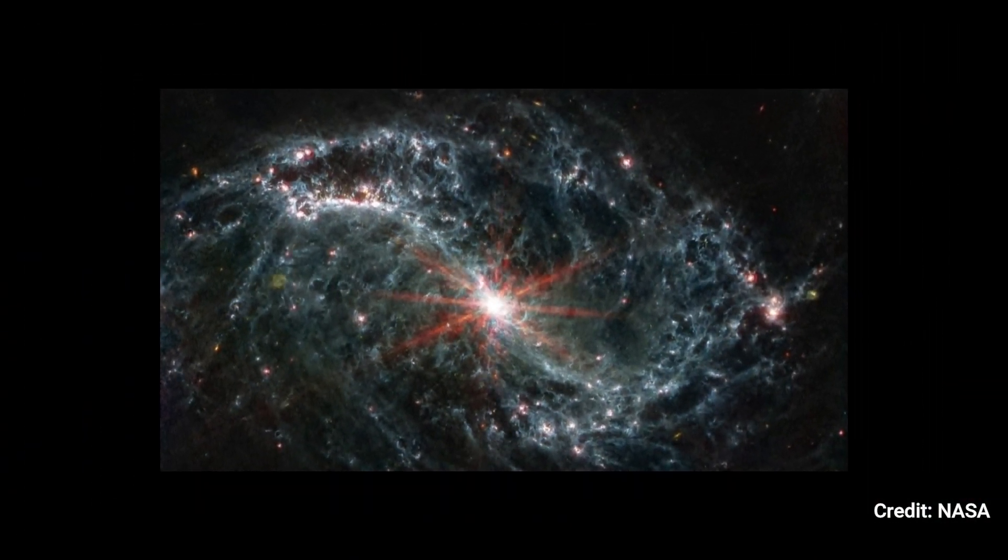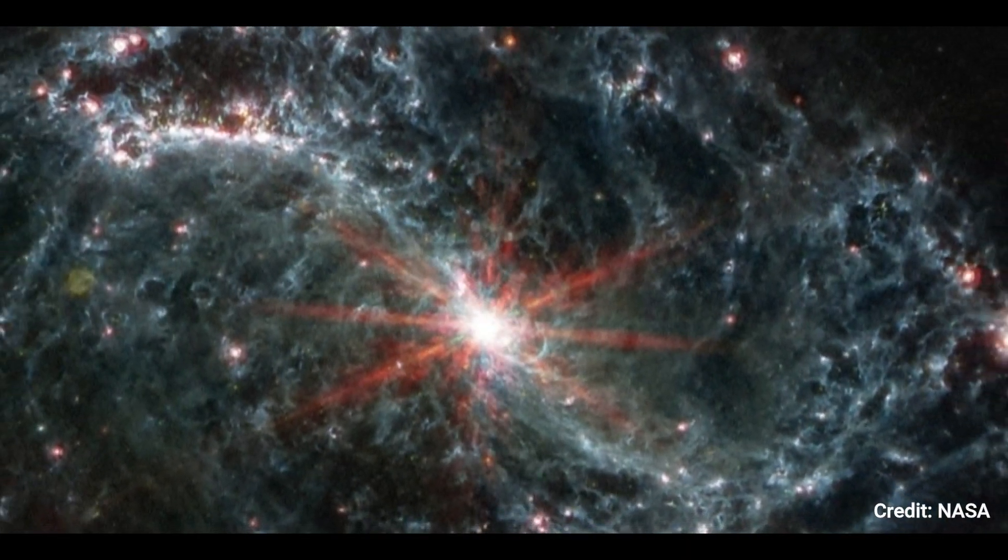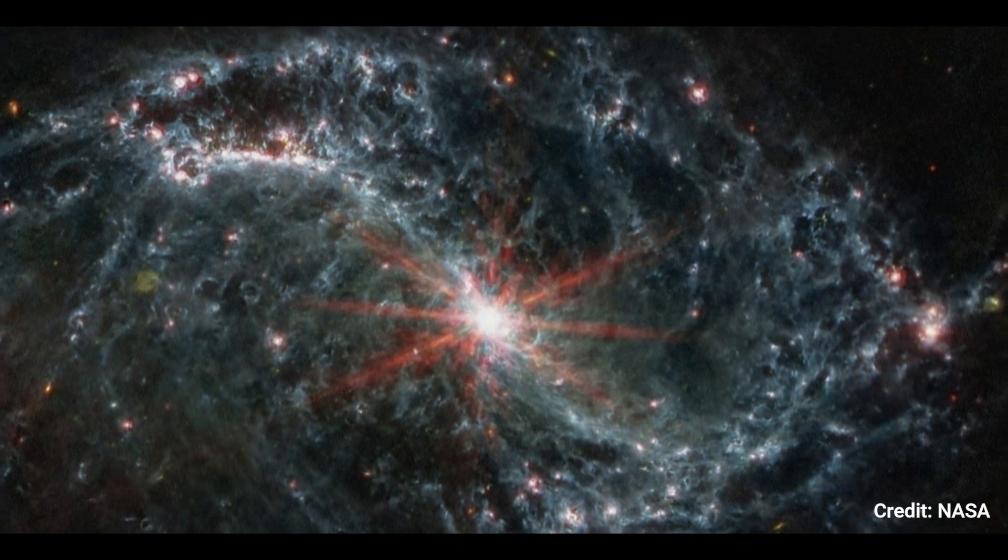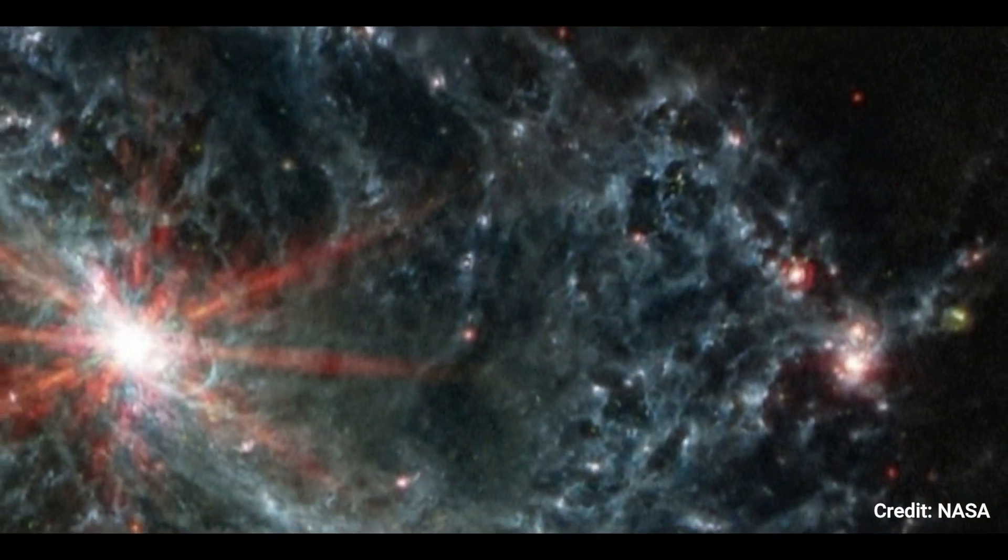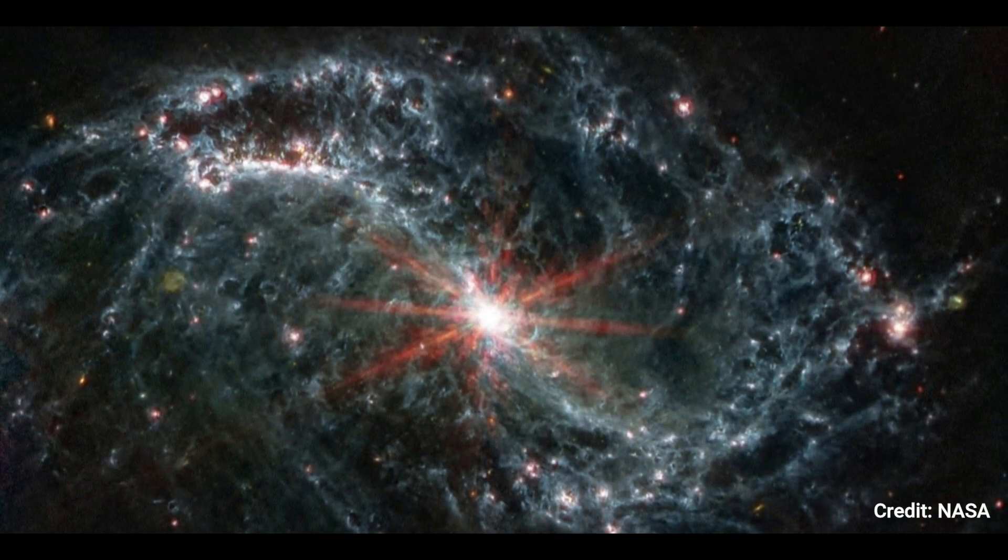A scale bar labeled 3500 light-years, 30 arc seconds, is located in the lower right. The scaling bar's length is around one-fifth the image's whole width. A color key is provided below the image, indicating which MIRI filters were used to construct the image and which visible light color is allocated to each filter.